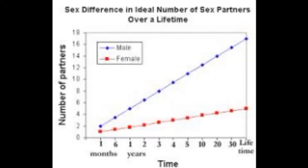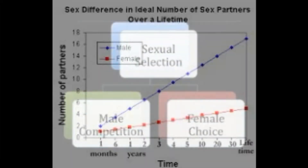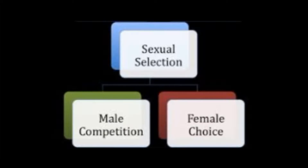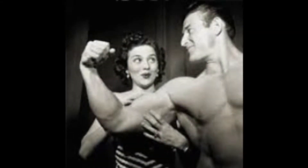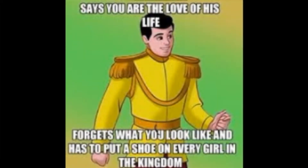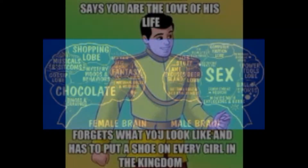Evolutionary explanation is based on a biological difference between males and females, which is called anisogamy. For males there are many sperm cells during the lifetime, while for females there are few eggs. The parental investment theory proposes that the sex that invests more heavily in the offspring is more selective in mate choice than the less investing sex. The higher investing sex is usually the female, as women must carry the fetus in the womb for nine months and nurse the infant for years afterwards.